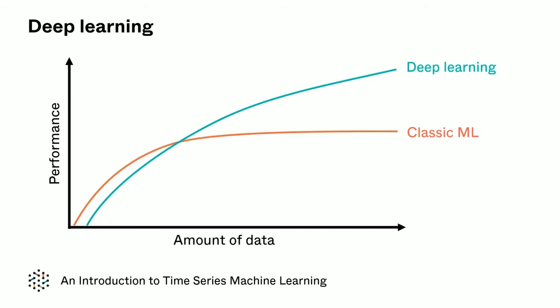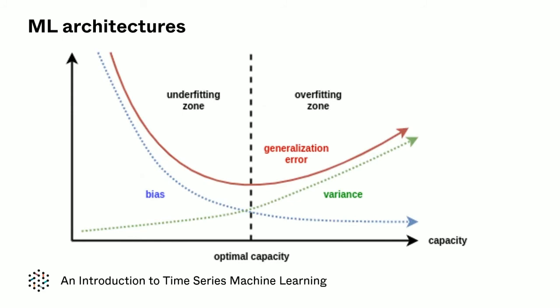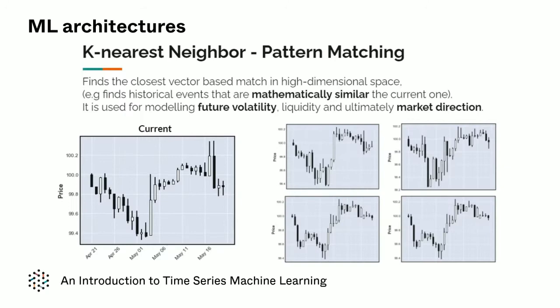The universe of both classic and deep architectures are leveraged depending on data availability and performance. Combining disparate ML architectures reduces out-of-sample variance known as overfitting.